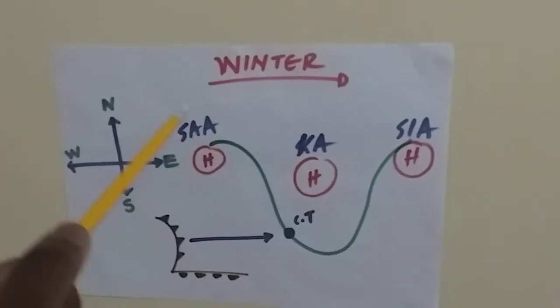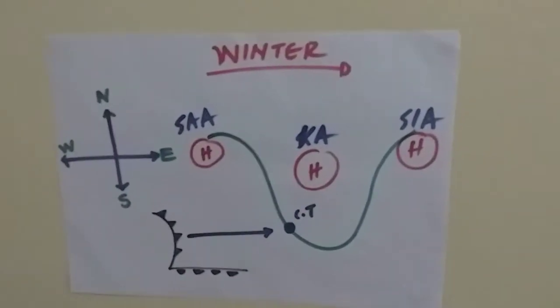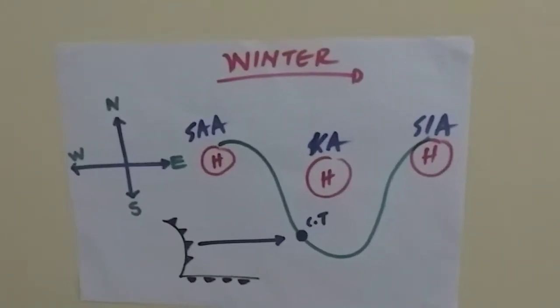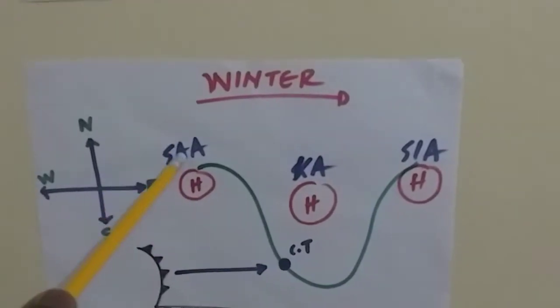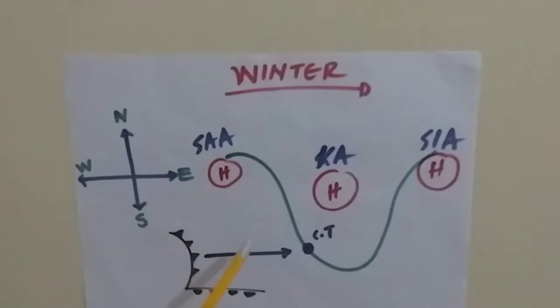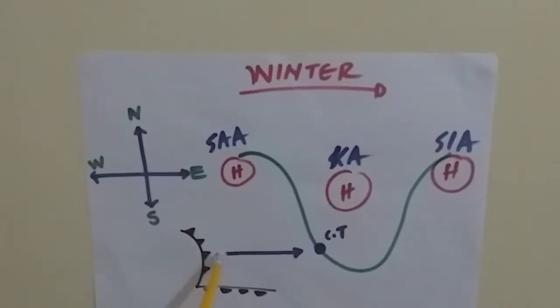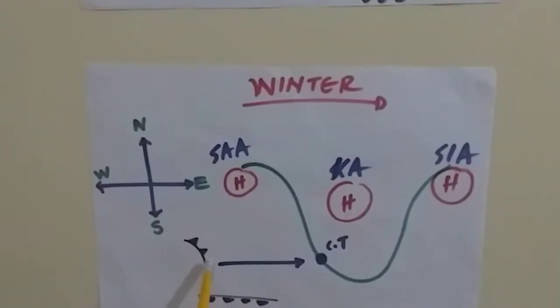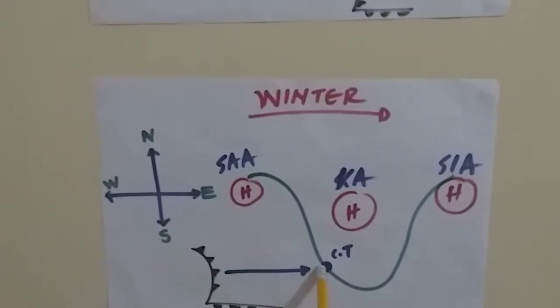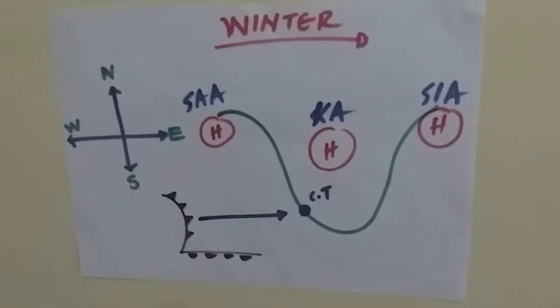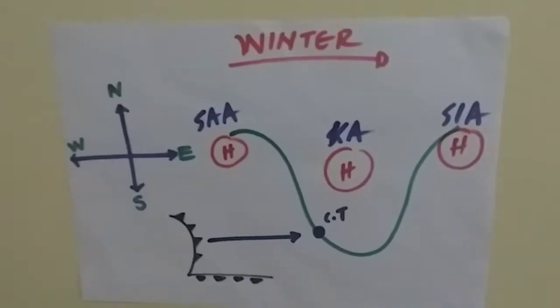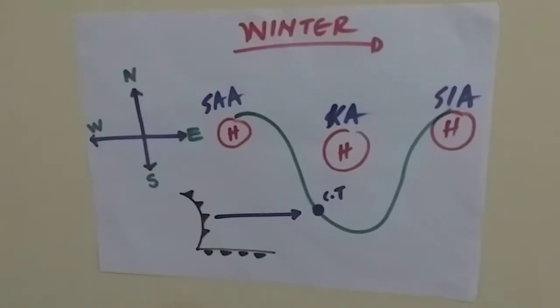So in the examination, your answer would be winter, because the South Atlantic anticyclone that acts as the blocking high migrates northwards, thereby leaving space for the mid-latitude cyclone to pass through, therefore affecting South Africa.